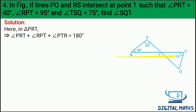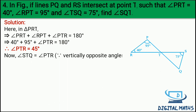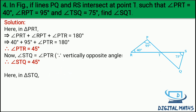So angle PTR = 180 minus 95 minus 40 = 45 degree. Calculation aapko karni hai. Now angle STQ = angle PTR - vertical opposite angles. So angle STQ = 45 degree. Now in triangle STQ: angle STQ + angle TSQ + angle SQT = 180 degree. STQ = 45, TSQ = 75 diya hua hai.